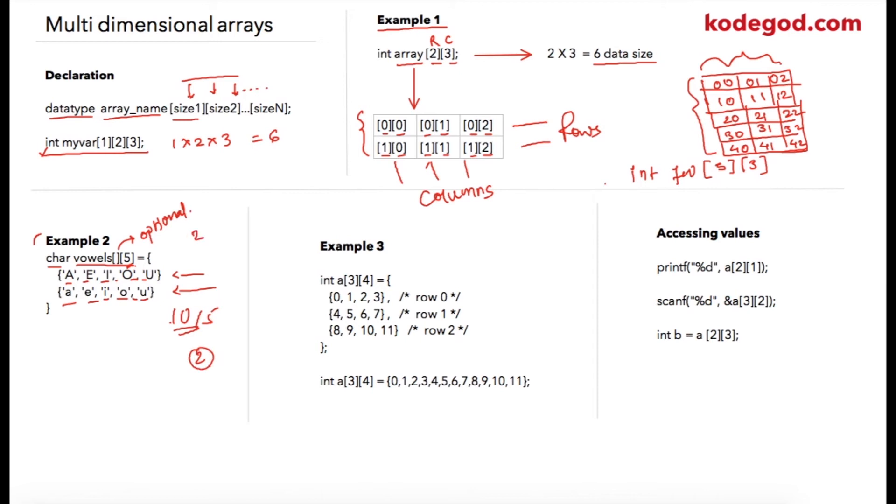Now let us take this third example. When you specify both the size elements, this is called a sized array. In this example I have initialized this array by specifying values. So again these are my rows and these individual elements are my columns.